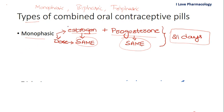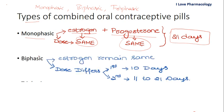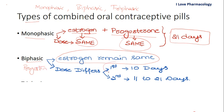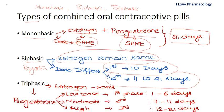In biphasic pills, the estrogen dose remains the same for all 21 days, but the dose of progesterone varies. During the first 10 days one dose is administered, and from day 11 to day 21 another dose is administered — that is why they are called biphasic, because two different doses of progesterone are given during these 21 days.